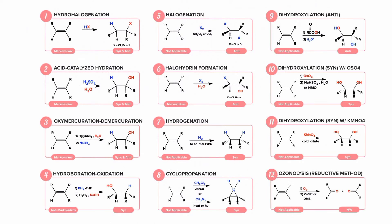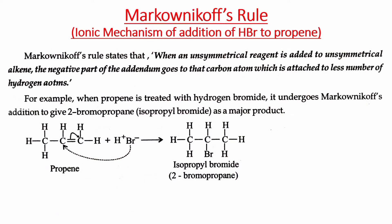We have seen many types of reactions: hydro-halogenation, hydrogenation, dehydrogenation, acid-catalyzed hydrogenation, and halohydrogenation reactions. There are many types of reactions that alkene molecules can undergo. Now let us come to the next topic, which is Markovnikov's rule.